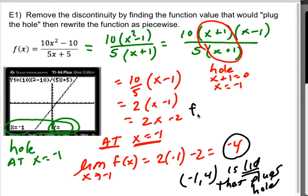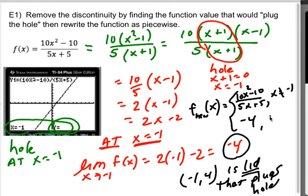So what I'm going to do is I'm going to rewrite and say that my new version of f(x), I'll just call it f new, is going to be this function they gave me, 10x squared minus 10 over this 5x plus 5, for any x value that is not equal to negative 1. And it's going to be a negative 4 for x values that are equal to negative 1. What that's saying is do exactly what this graph is doing everywhere else. But then at negative 1, you're going to plug in a negative 4. And that'll plug the hole.